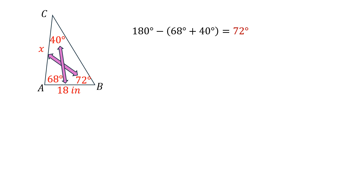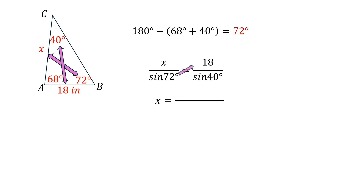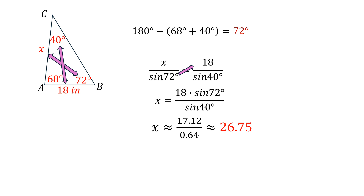Now we can apply the Law of Sines: x over sine 72 degrees equals 18 over sine 40 degrees. Cross-multiplying gives x equals 18 times sine 72 degrees over sine 40. Calculating: 18 times sine 72 is approximately 17.12, and sine 40 is 0.64. Dividing gives x ≈ 26.75. The unit is inches, so the final answer is approximately 26.75 inches.